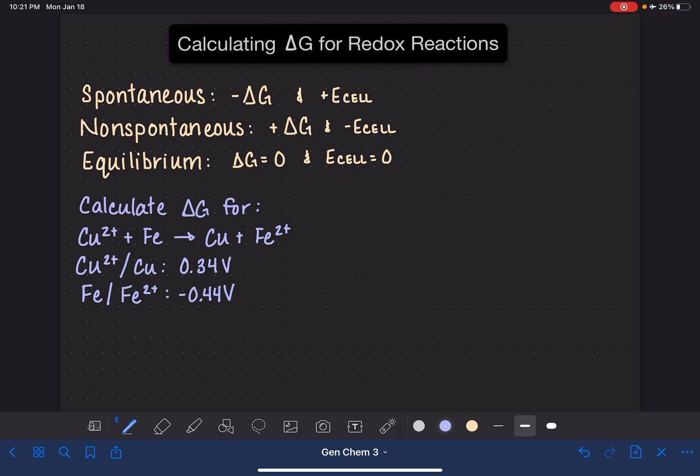This gives us a relationship between delta G and E cell. We can see that it's a direct relationship, but it is opposite in sign. The equation that we can use to calculate delta G from E cell is negative NF E cell. If these are standard conditions, we could go ahead and put a standard symbol on there. Most of the terms in this equation you're already familiar with. So you already know that delta G is Gibbs free energy.